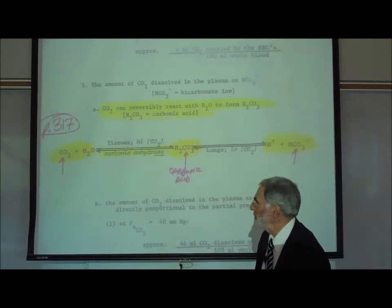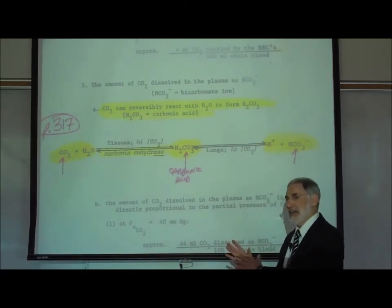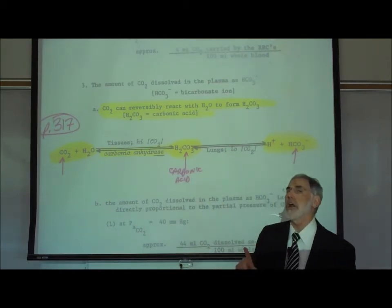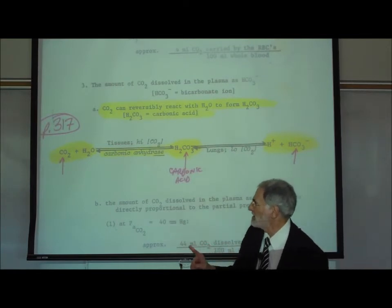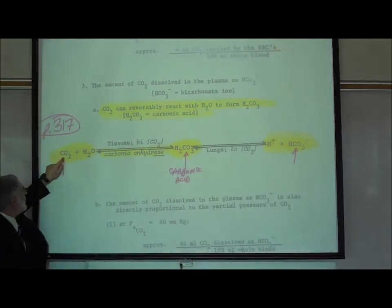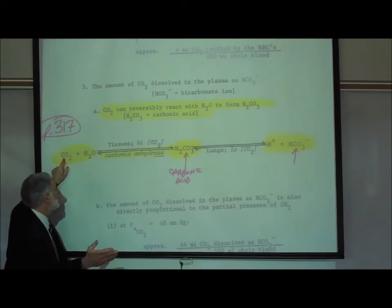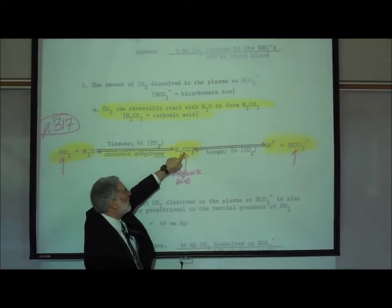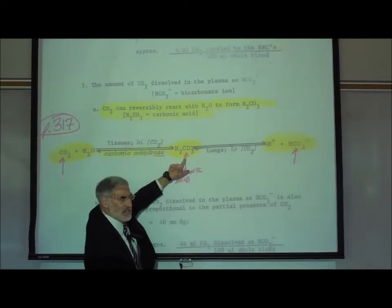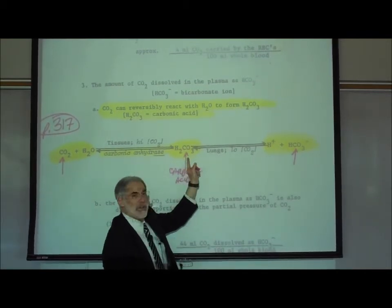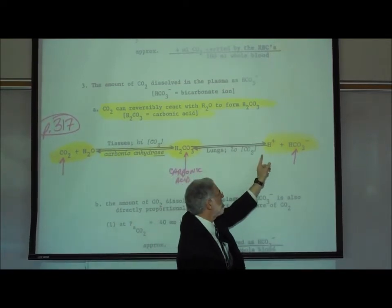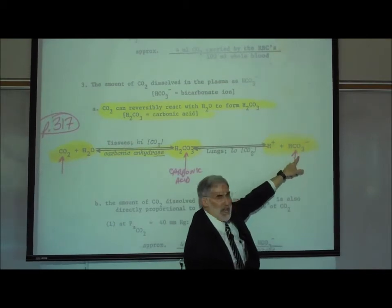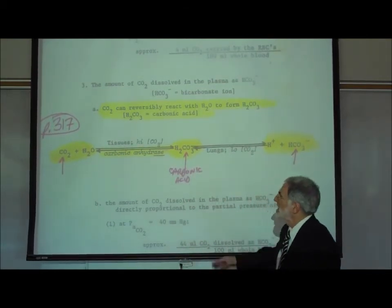Why do we say that most of the carbon dioxide carried in the bloodstream is in the form of bicarbonate? Let's track where the carbon atom of carbon dioxide goes. Here is the carbon in carbon dioxide. Over here in carbonic acid, there is that same carbon. After the carbonic acid dissociates, the carbon atom is right here — now in the form of bicarbonate.